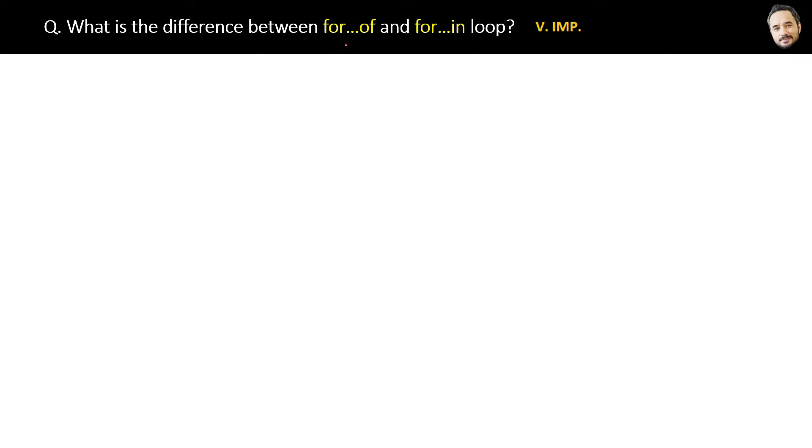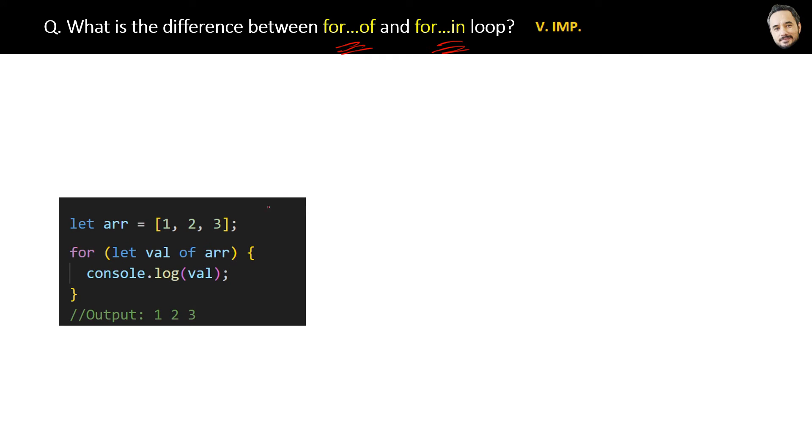What is the difference between for...of and for...in loops? This is a very good comparison. We know the for...of loop - if we have an array, we can easily iterate through it by using the for...of loop. The definition is: for...of loop is used to loop through the values of an object like an array or a string.